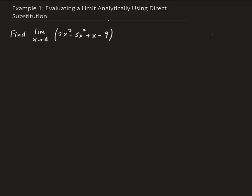So using the property of limits, we can rewrite this as the limit as x approaches 4 of 2x cubed minus the limit as x approaches 4 of 5x squared plus the limit as x approaches 4 of x minus the limit as x approaches 4 of 9.